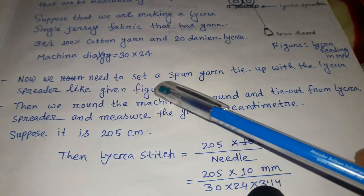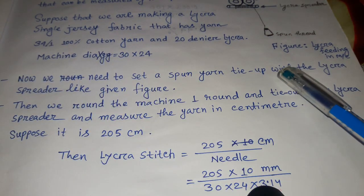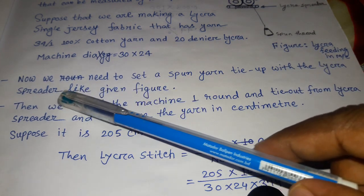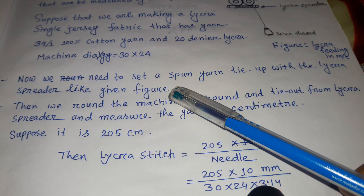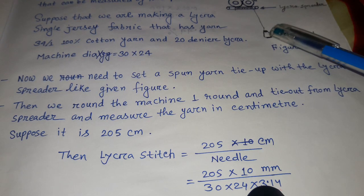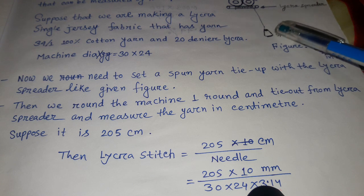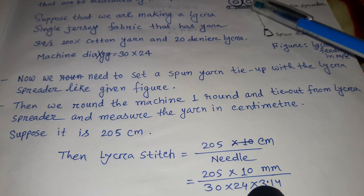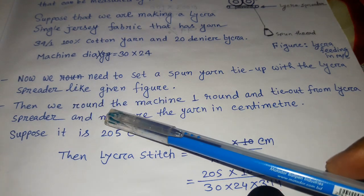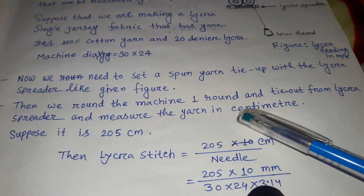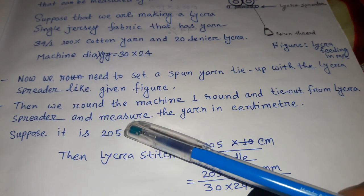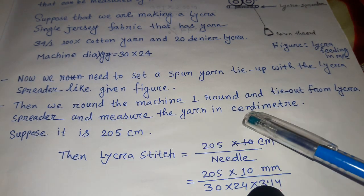We need to tie up the spun yarn with the lycra spreader as shown in the given figure. Then we run the machine one round, tie out from the lycra spreader, and measure the yarn on a 204 cm scale. Suppose it measures 205 cm.